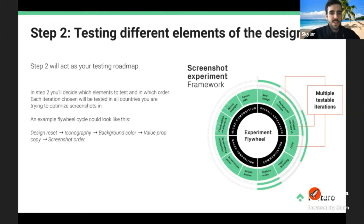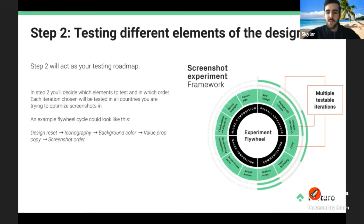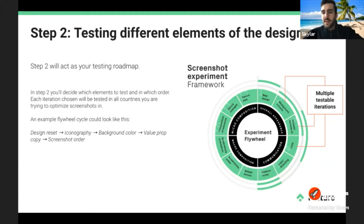Step two acts as your testing roadmap. You'll decide which elements to test and in which order. The idea is that each iteration you choose will be tested in all the countries you're optimizing for. An example flywheel cycle could start with the design reset, then add some iconography, then test different background colors — and Google Play lets you test up to three variants simultaneously, so A/B/C/D testing is possible.